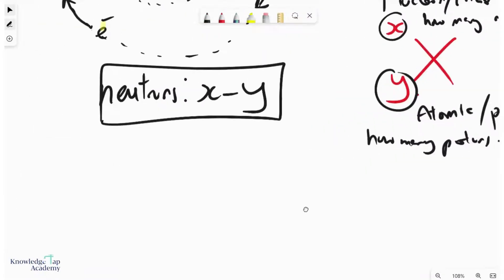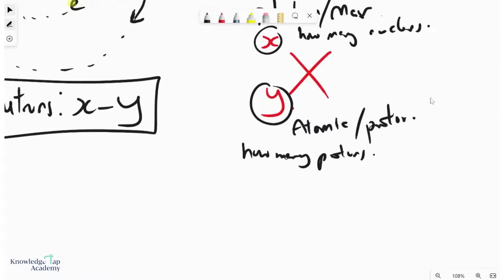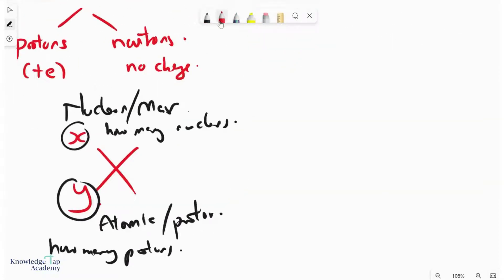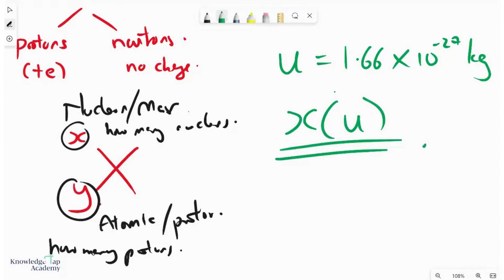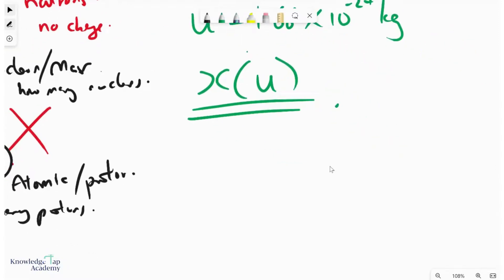And so moving on, something interesting about this nucleon number, I'm going to introduce you to a symbol, U, the unified atomic mass unit. So 1U is equal to 1.66 times 10 to the minus 27 kilograms. This is a unit of mass that we use very commonly in nuclear physics. And a lot of times, if you take the nucleon number X multiplied by U, you will get the mass of that nucleus in kilograms. It won't be particularly accurate, but it is good enough for most situations.